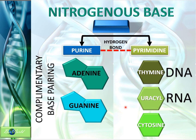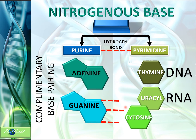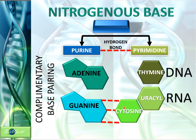Cytosine, on the other hand, is found in both DNA and RNA. Cytosine specifically binds to guanine, and vice versa, guanine only binds to cytosine. When they bind, three hydrogen bonds form. So these are the five nitrogenous bases: adenine, guanine, thymine, uracil, and cytosine. However, DNA alone will have only four nitrogenous bases — adenine, guanine, thymine, and cytosine — while RNA will only have four: adenine, guanine, uracil, and cytosine.